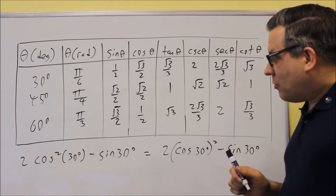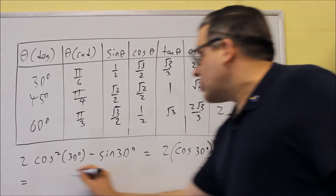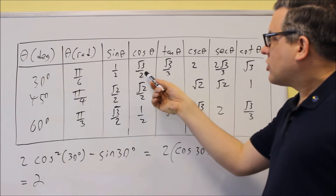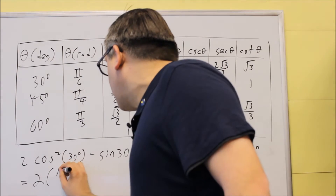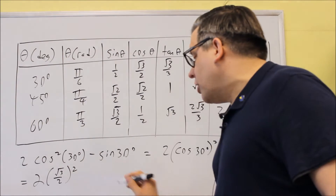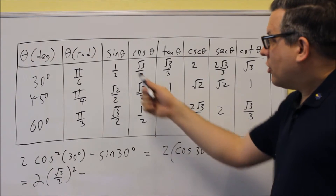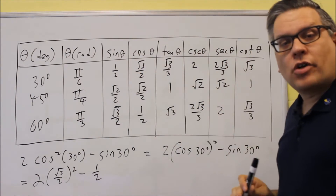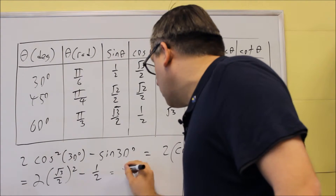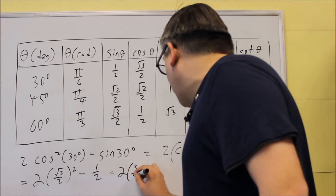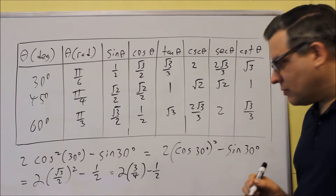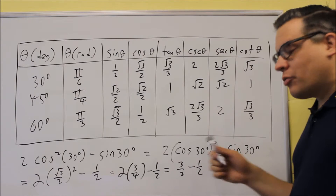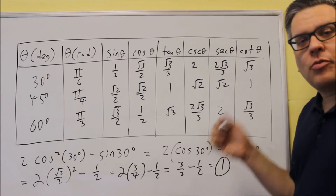We take the values from the table and substitute them in. For cosine 30, that's √3 over 2, and we square it. For sine 30, that's 1 half. So we have 2 times (√3/2)² minus 1/2. Squaring √3/2 gives 3/4, so we have 2 times 3/4, which is 6/4, reducing to 3/2. Then 3/2 minus 1/2 gives 2/2, which equals 1. So the exact value is 1.